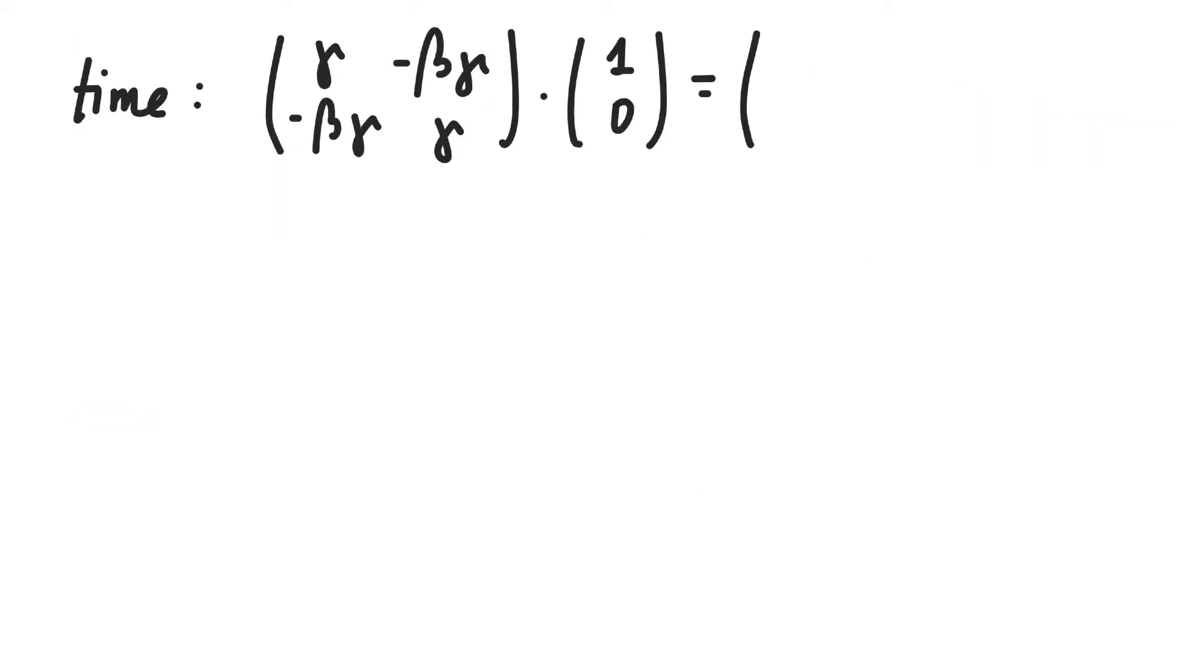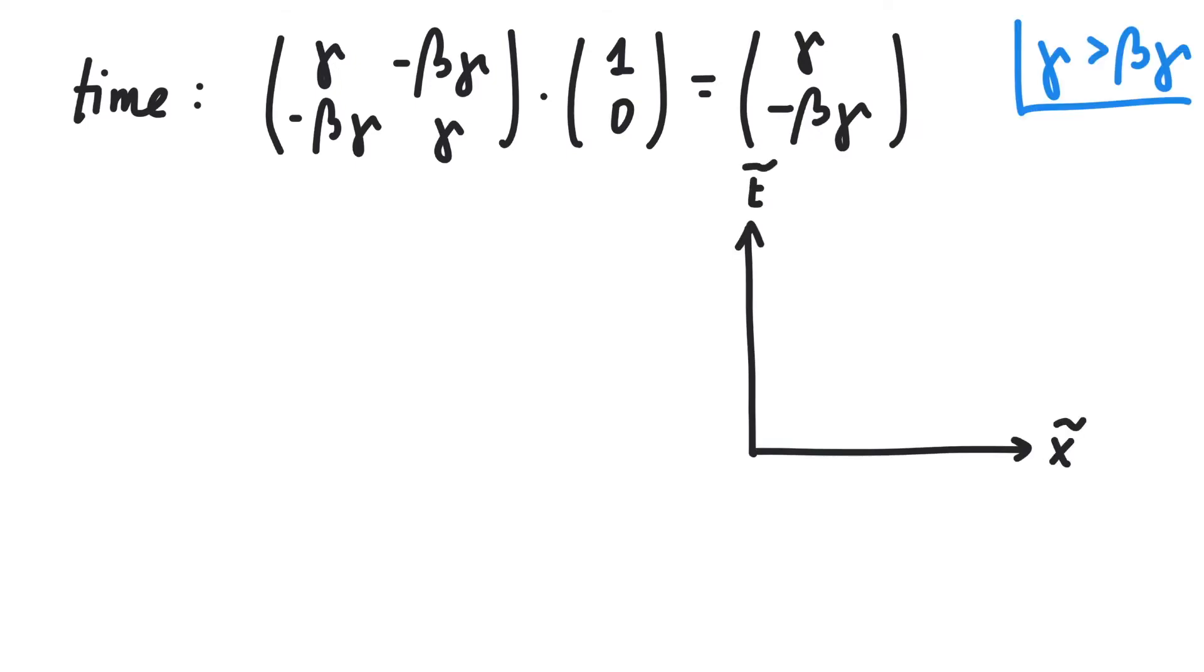After multiplying, 1,0 becomes this. Gamma upwards and beta gamma to the left.